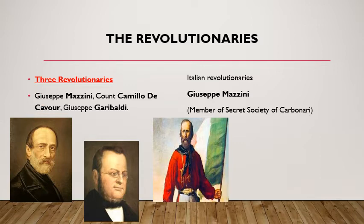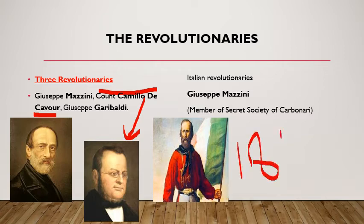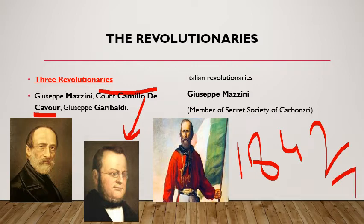Count Camillo de Cavour, a political leader and Italian statesman, was born at Turin on August 1, 1810. At the age of 10, he entered the military academy at Turin. He was a significant figure in the movement towards Italian unification and the founder of the original Italian liberal party. He founded the agrarian association in 1842 and the newspaper Il Risorgimento in 1847, where he struggled to establish a constitutional monarchy.